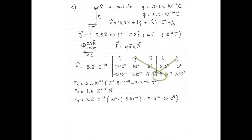Next, as shown by the green arrow mnemonic, the Y component of the force is the charge, 3.2 times 10 to the negative 19, multiplied by the Z component of the velocity, 10 to the 6 meters per second, times the X component of the magnetic field, negative 5 times 10 to the negative 4 Tesla, minus the Z component of the magnetic field, 8 times 10 to the negative 4, times the X component of the velocity, 5 times 10 to the 5. The Y component of the magnetic force is negative 2.88 times 10 to the negative 16 Newtons.